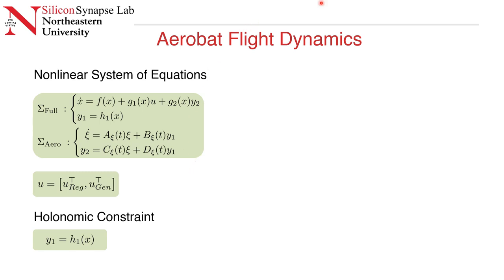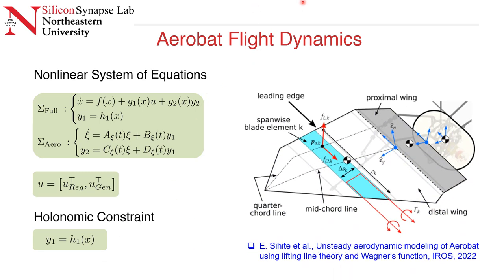Taking a look at the other two equations, which shows the aerodynamics of aerobat. Y2 denotes the aerodynamic forces. The terms A, B, C, and D are the matrices that are derived from the Wagner indicial model and Prandtl lifting line theory. The diagram shows the center of masses of the system along with blade elements, aerodynamic forces, and Horsu vertex circulations. More details regarding the formulation of aerodynamics can be found in the paper by Eric Sihite published in IROS, which is cited here.